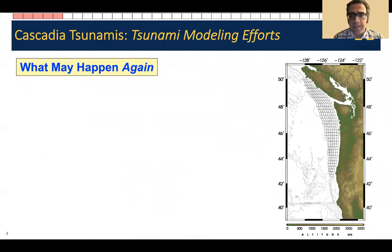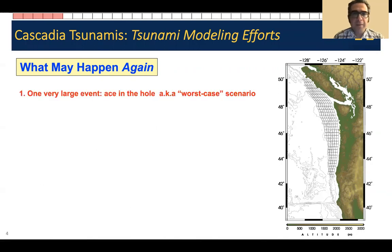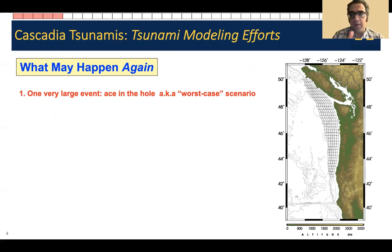So what do we know about the Cascadia subduction zone? Everything has started, as we know, with the 1700 earthquake and its impact across all the Pacific Ocean. Everything since then has been thousands and thousands of efforts at reconstructing the propagation of tsunamis in the region and in the Pacific Ocean.